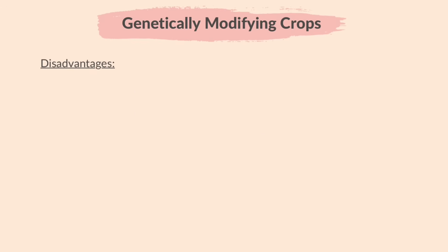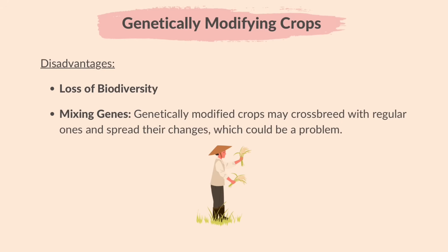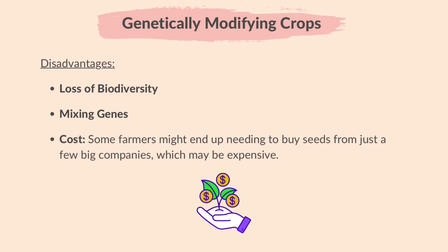The disadvantages are: Loss of biodiversity — using a lot of genetically modified crops might mean we don't see as many different types of plants anymore. Mixing genes — genetically modified crops may cross-breed with regular ones and spread their changes, which could be a problem; for example, if weeds also become herbicide-resistant. Cost — some farmers might end up needing to buy seeds from just a few big companies, which may be expensive.